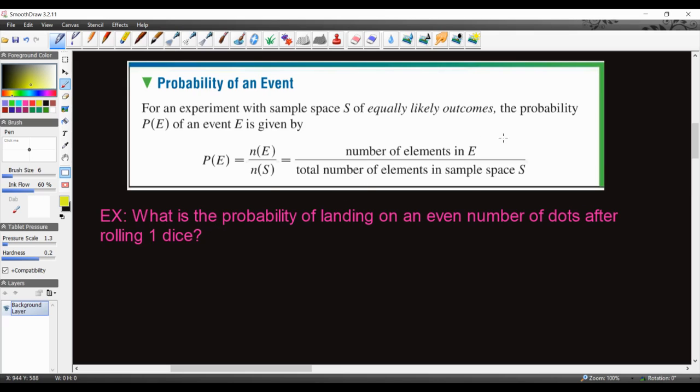So let's go ahead and go right into an example. This one says, what is the probability of landing on an even number of dots after rolling one die? Assuming it has the six sides. So an even number would be 2, 4, 6, correct? So let's go ahead and put that. We know that 2, 4, and 6 are all of our even numbers. So this would kind of be our E here, the number of elements in E. And then the total number of elements would be S, the sample space. So that would be everything: 1, 2, 3, 4, 5, 6.